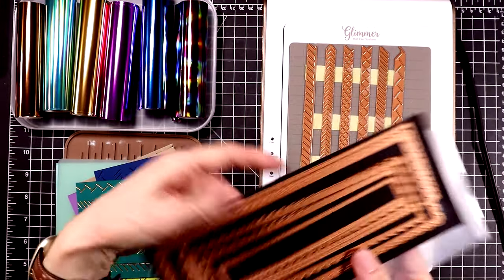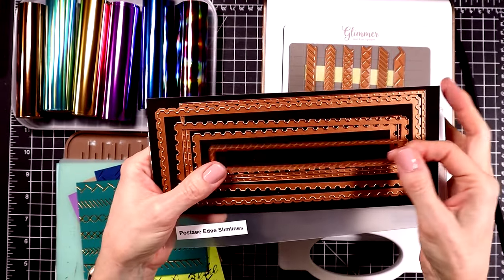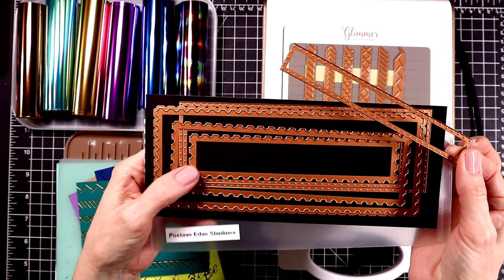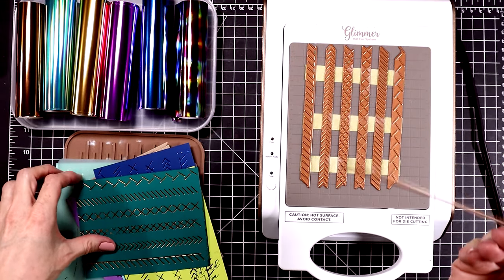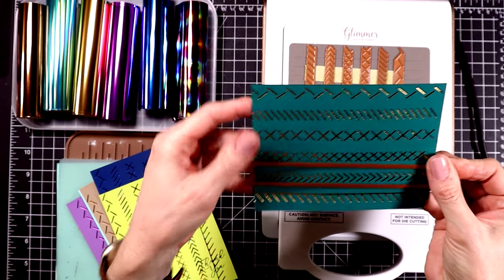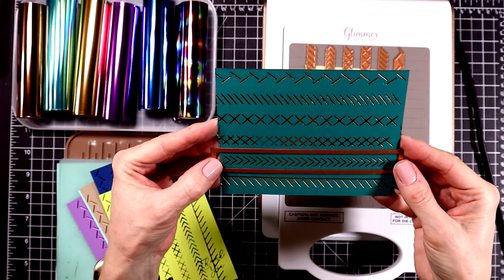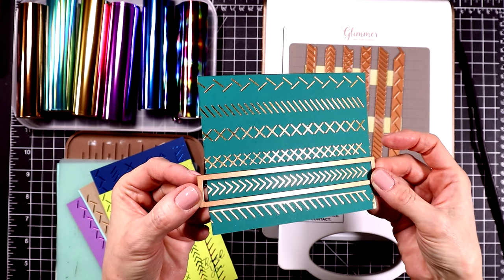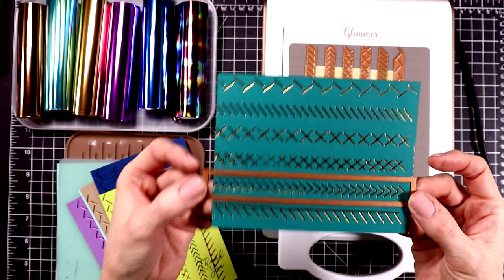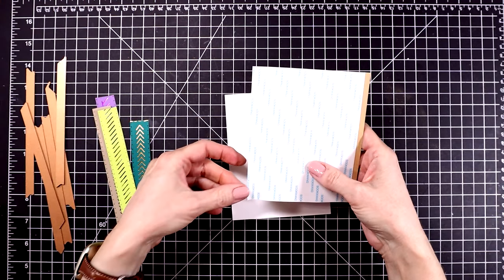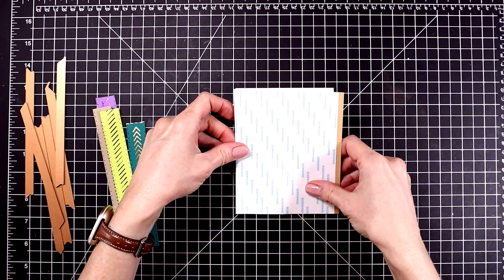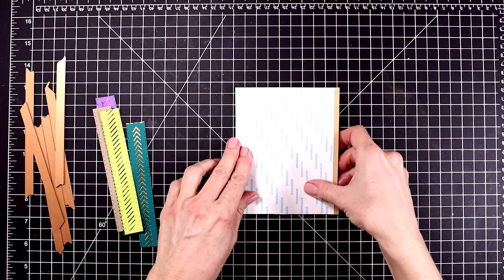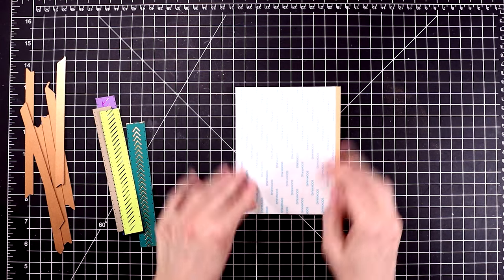I use some gold foil there and now to cut these out I'm using my postage edge slimline dies and the very smallest die has some cute stitch marks around it as well but it's just the right size to cut out these strips. Some of them I will cut out with this die and then some I'm just going to cut out with my paper trimmer but let's put this card together.